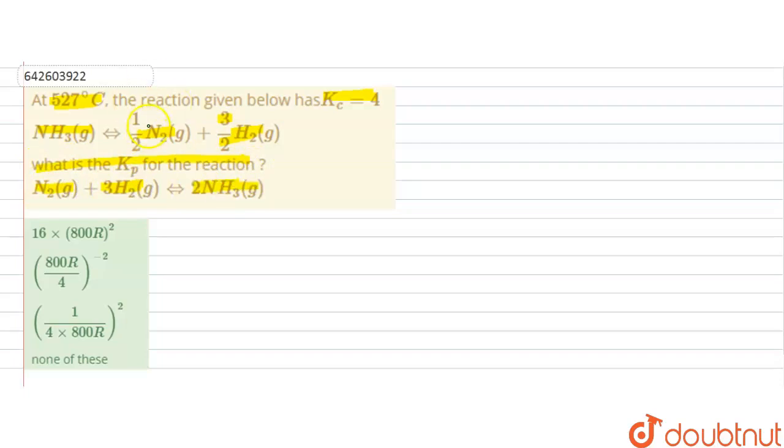In this question it is given a reaction that is NH3 giving half nitrogen plus 3 by 2 H2. Its Kc is 4. Now we have to calculate the Kp for this reaction.